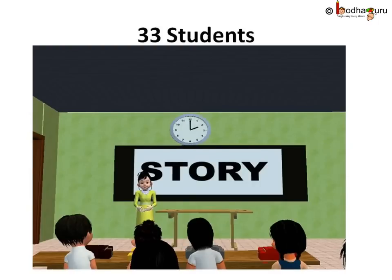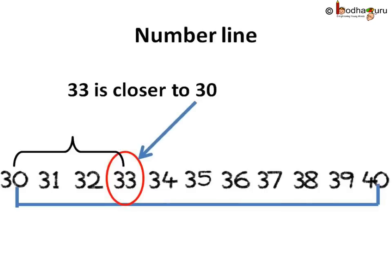What if 33 students were there in your class? Let us again use the number line. See, this is 33. It is between 30 and 40. If you see closely, 33 is closer to 30 as compared to 40.